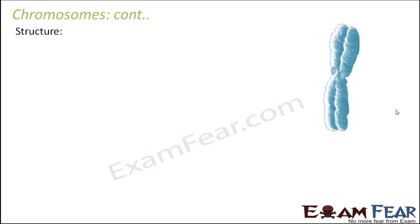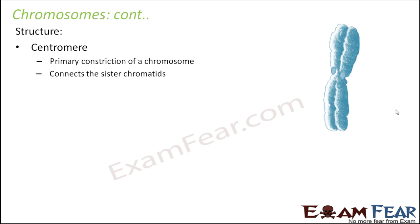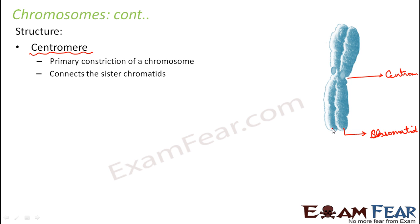Now talking about the structure of a chromosome - there is a structure called the centromere. The centromere is the central portion of the chromosome; it is the primary constriction of the chromosome. It connects the sister chromatids - each part of the chromosome is called a chromatid, so one chromosome consists of two chromatids. Since both belong to the same chromosome, they are known as sister chromatids.